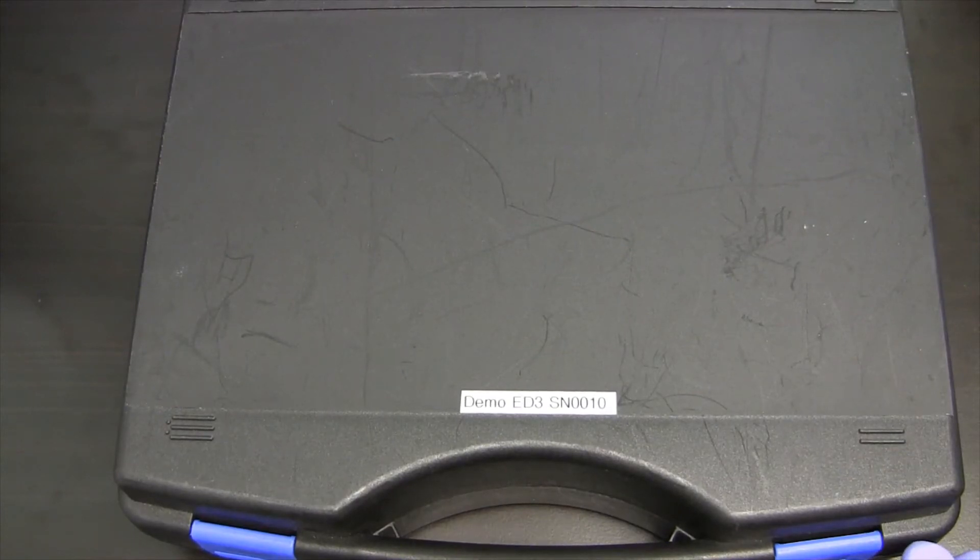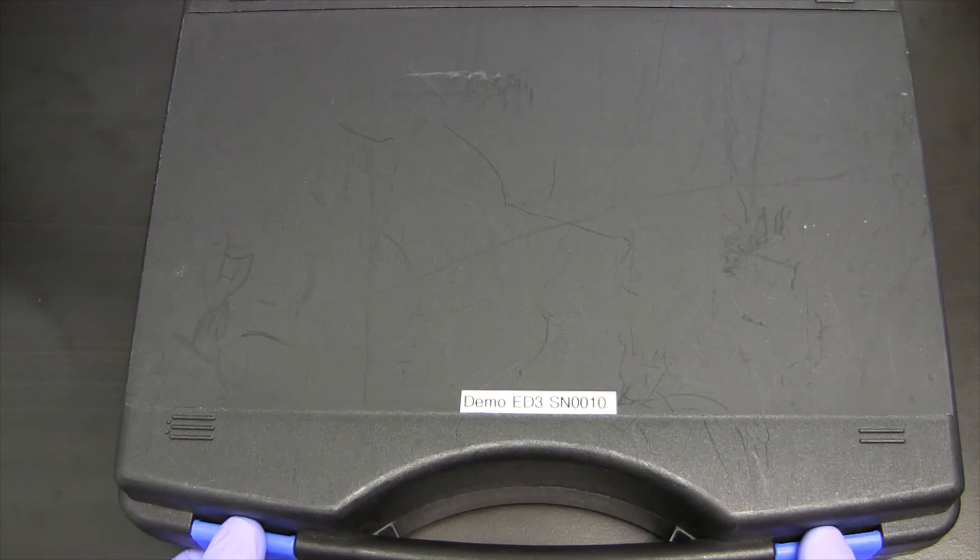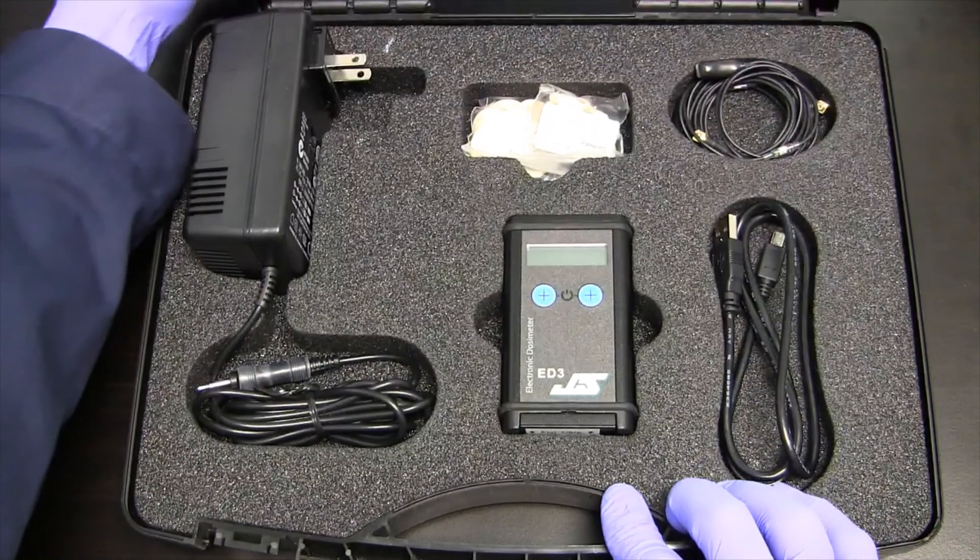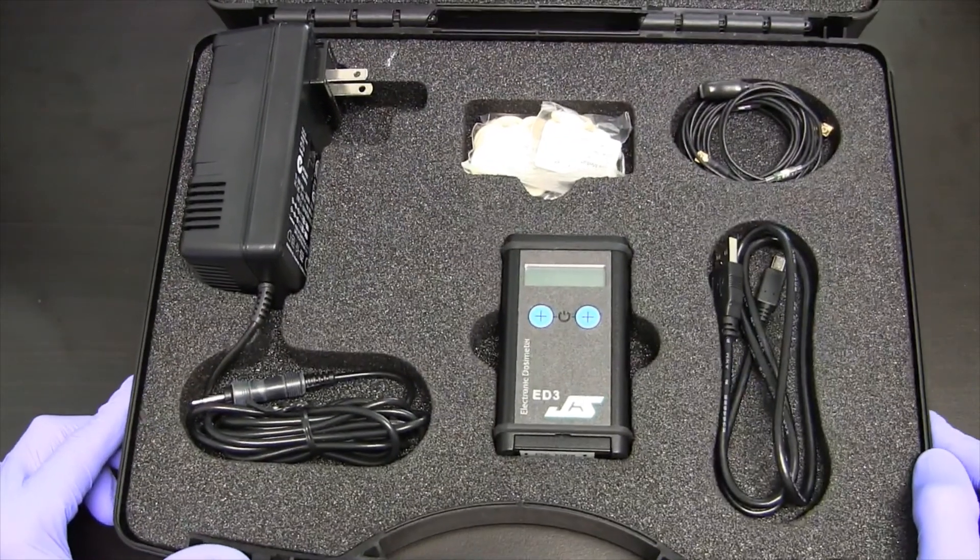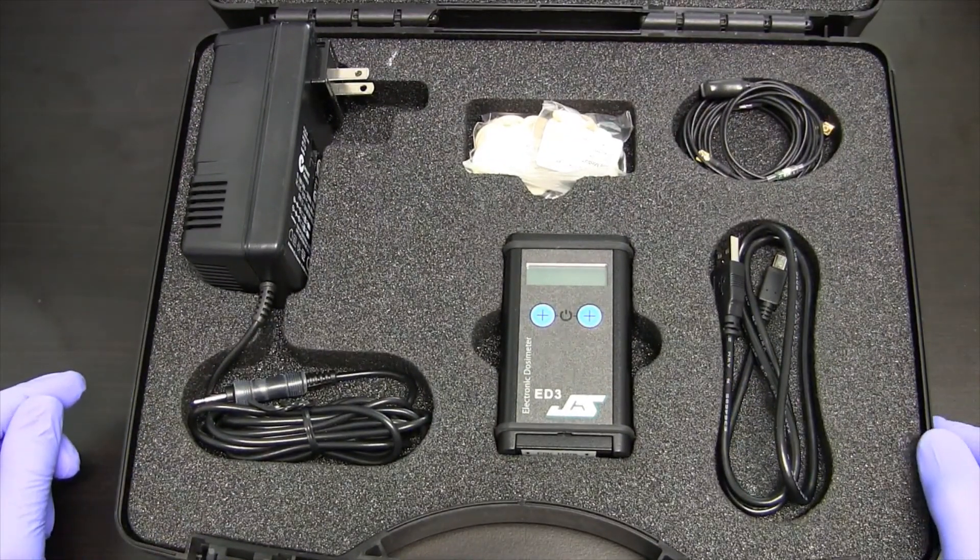This video describes the ED3 active extremity dosimeter. This is the case that the dosimeter comes in, has two locks to open it. And what you'll see here are the different components of the ED3.